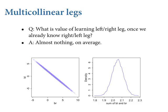What matters is the sum of these two coefficients. If we just add them together in the posterior distribution, since they're strongly negatively correlated, we get a marginal posterior distribution for the sum that's quite certain — right around two, which is the simulated value I used. The model is doing a great job. If you read the table of coefficients, you'd think neither leg matters — but that's a mistake arising from ignoring the correlation between the parameters.